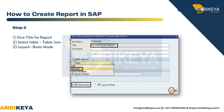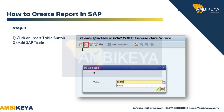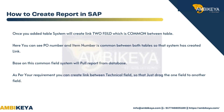Select Basis Mode. Step three: click on the Insert Table button and add the SAP tables. Once you have added the tables, the system will create a link on the field which is common between the tables. Here you can see that PO number and item number are common between both tables.